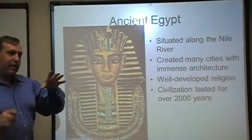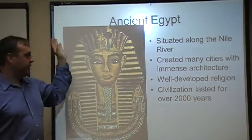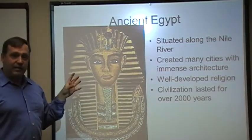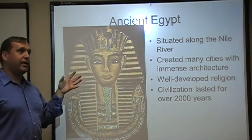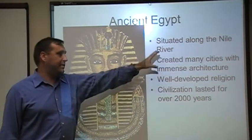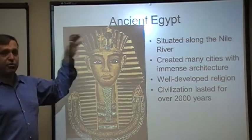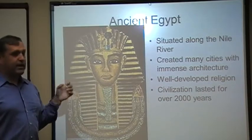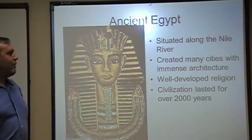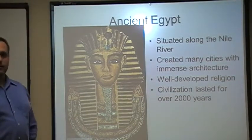Next we're going to shift from the eastern end of the Fertile Crescent to the western end — the ancient Egyptian civilization. It's situated along the Nile River. You're going to have a lot of cities. In many ways — especially the Old Kingdom — this is the greatest of the civilizations we're going to talk about. You've got immense architecture, a very well-developed religion, and it's extremely long-lasting — the civilization is going to last in that form for over 2,000 years, eventually evolving when we get to the Greek, Roman, and Islamic periods.